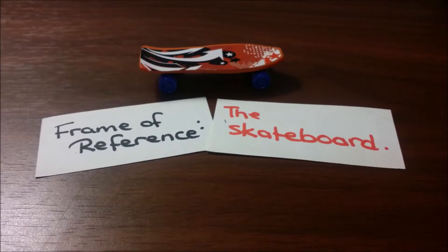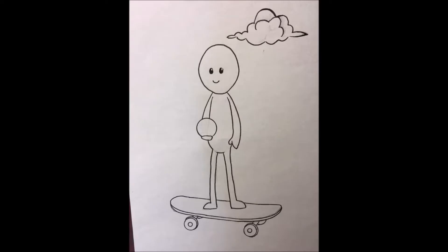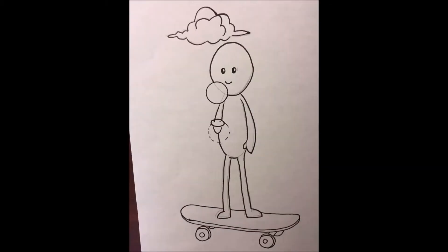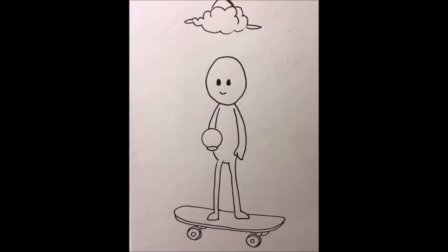Now let's consider the skateboard to be the moving frame of reference, a frame of reference in motion. This is Bob. He is throwing a ball in the air and catching it while riding his skateboard. He is stationary relative to the moving skateboard, so in his point of view, the trajectory of the ball is vertical.